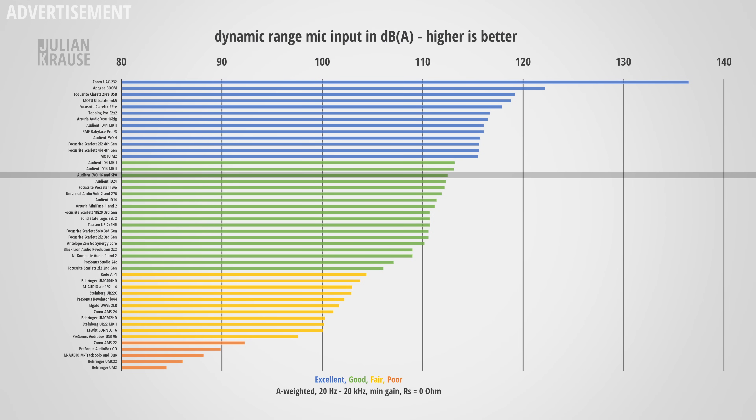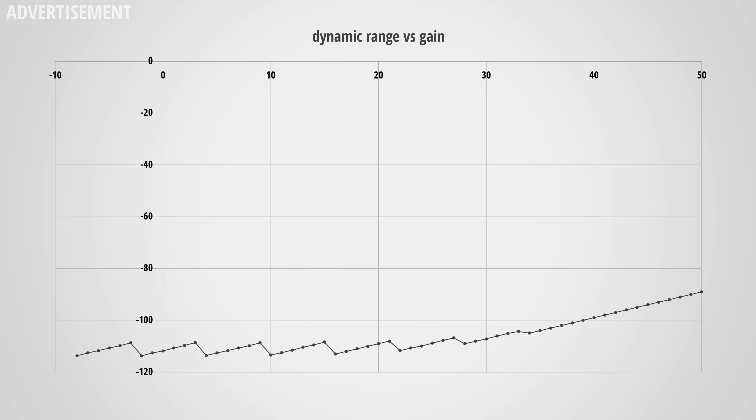For dynamic range — the ratio of the strongest signal to the noise floor — this should be as high as possible. My measurements show the Evo 16 and SP8 come in at around 112 dBA, which is not record-breaking but a real solid performance. I should mention that dynamic range changes slightly with different gain levels: in the lower and middle gain range it makes some jumps, so depending on where you set gain you might get slightly worse technical performance. In practice this probably makes no noticeable difference — just set your gain for a good recording level.